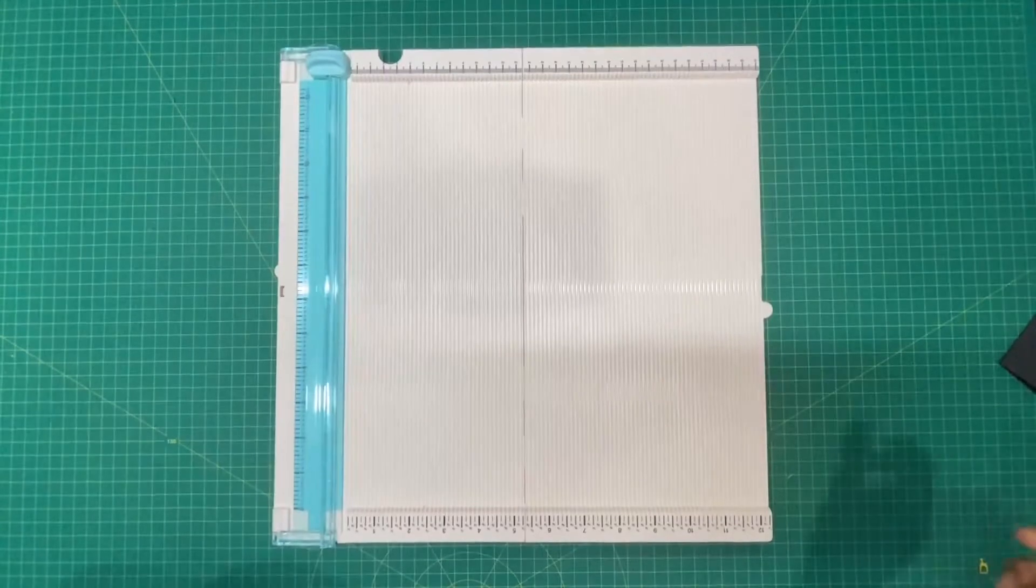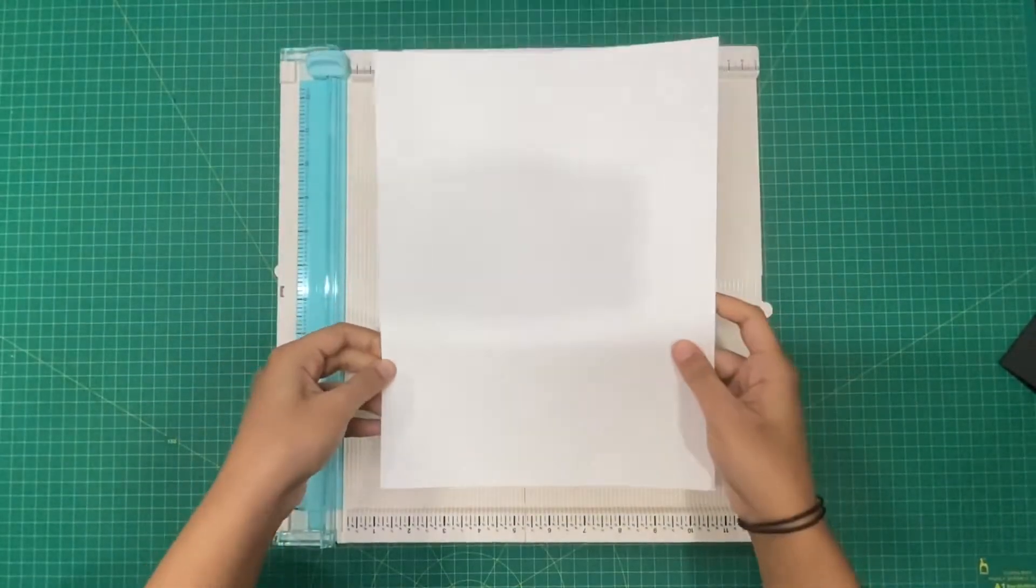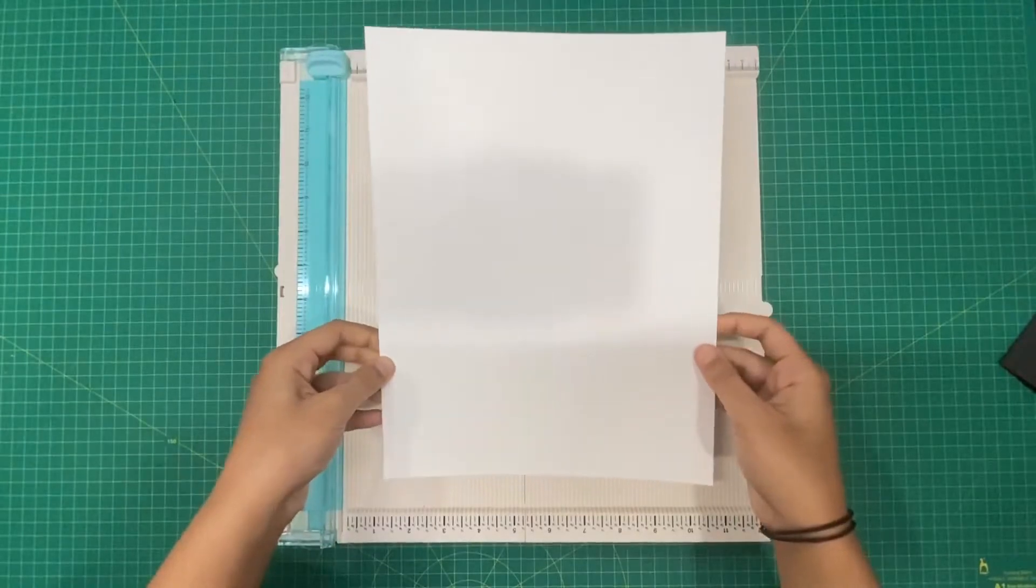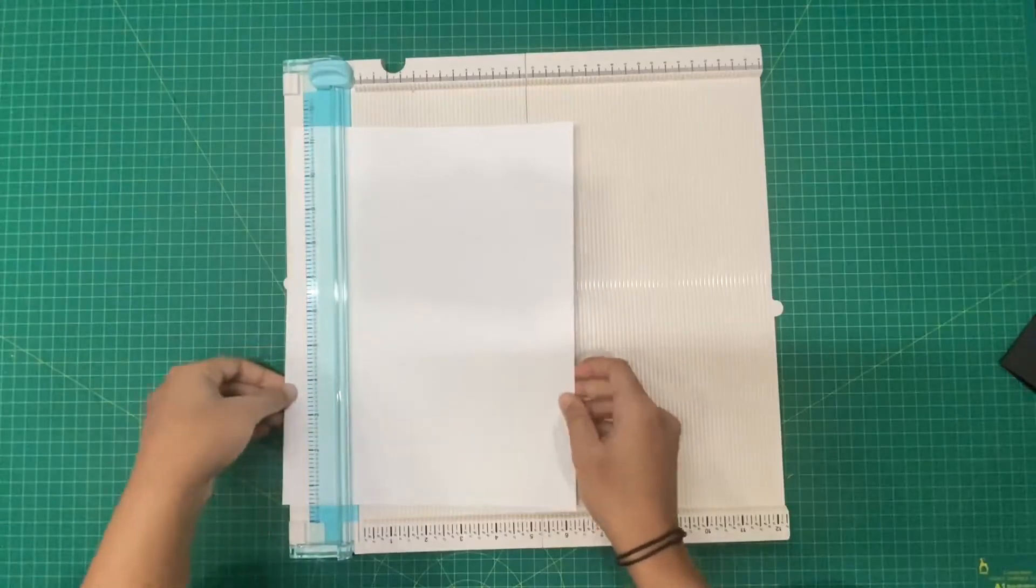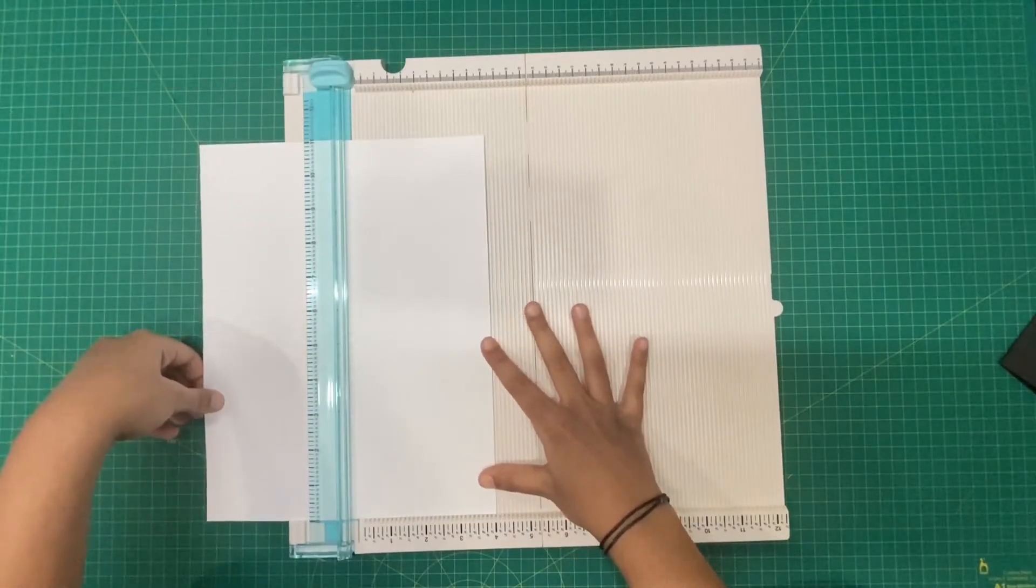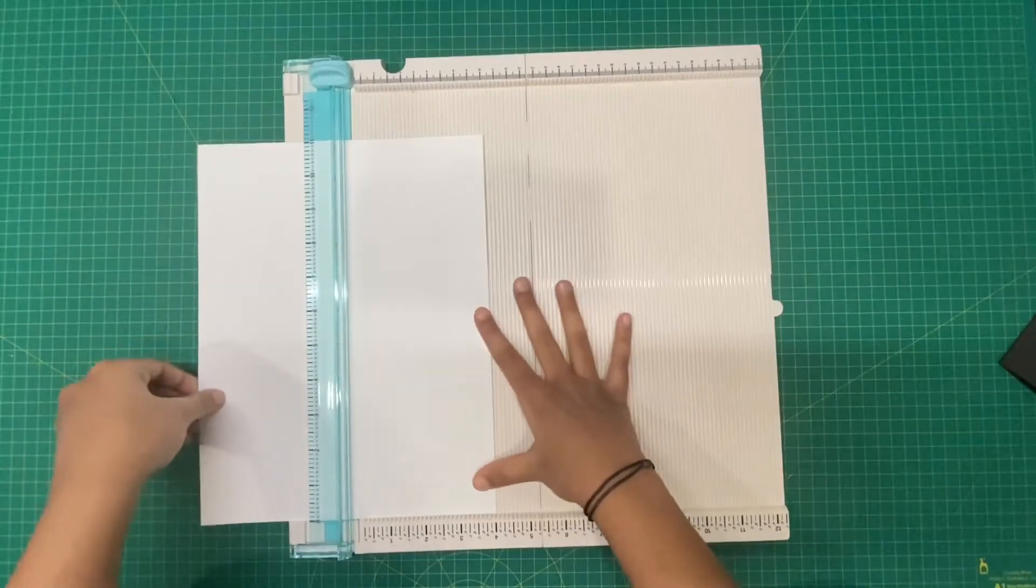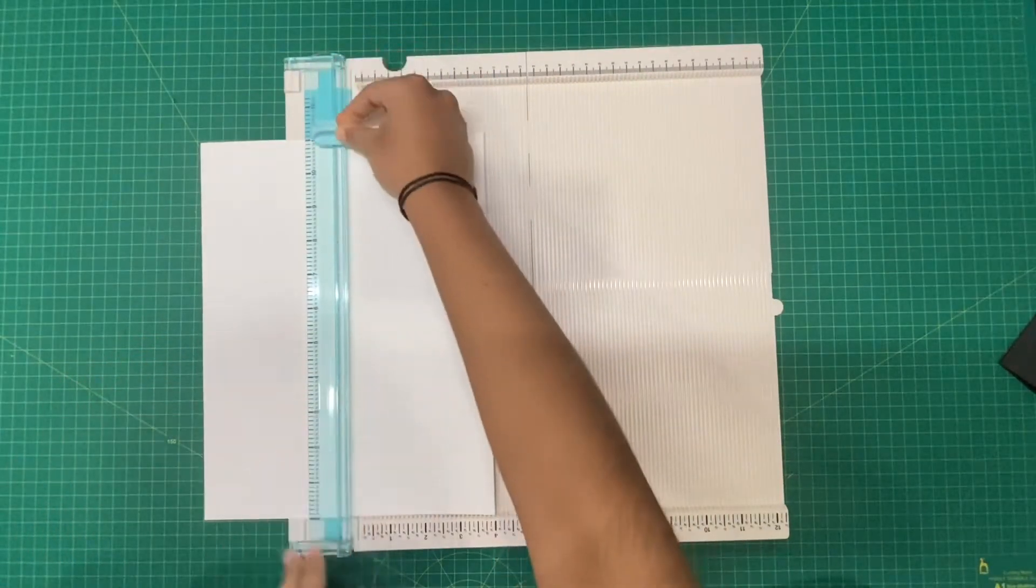We're going to use our white cardstock to cut a mat which is what we're going to do the dye ink technique on. I'm going to line this white cardstock on my cutting board to four inches because I'm decreasing a quarter inch to fit on the base cardstock. I'm going to cut.